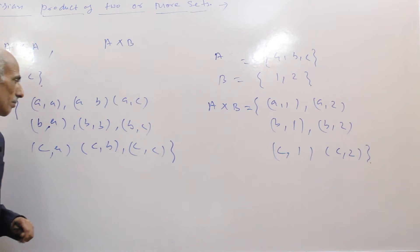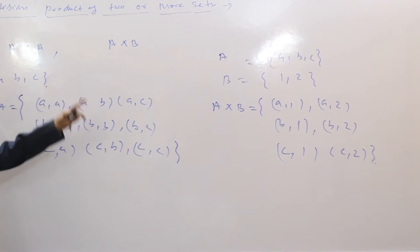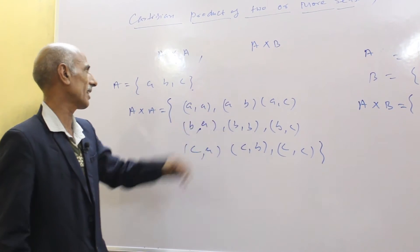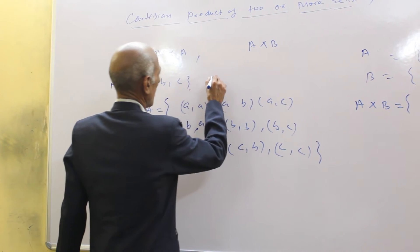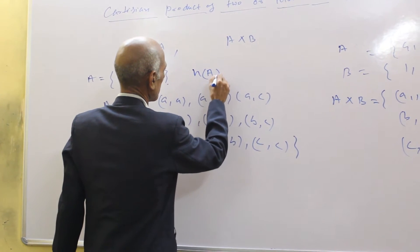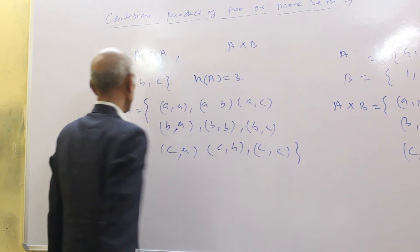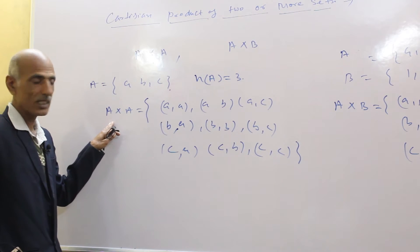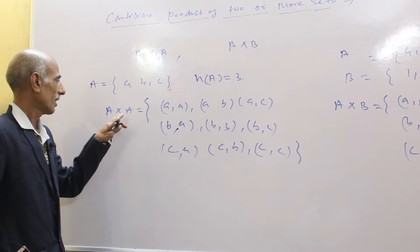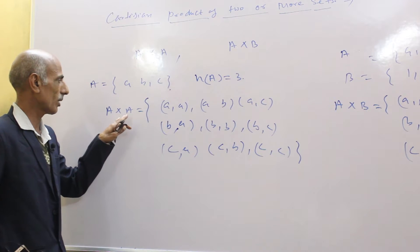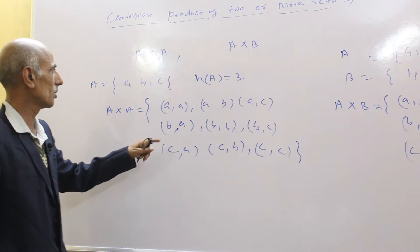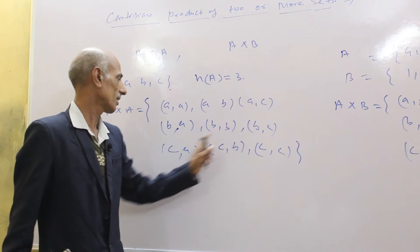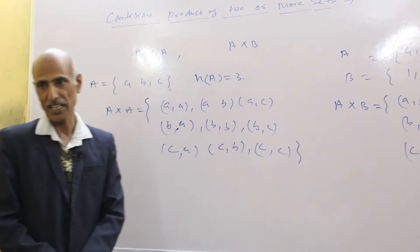Now let us discuss the number of elements in the Cartesian product set. The number of elements in A, N(A), is 3. You can count that the number of elements in the Cartesian product A × A is 1, 2, 3, 4, 5, 6, 7, 8, 9 — it is 9.